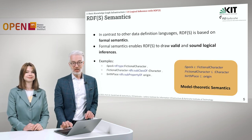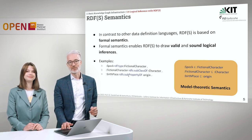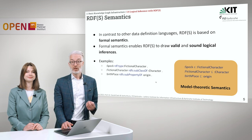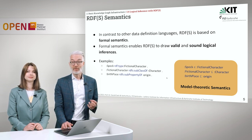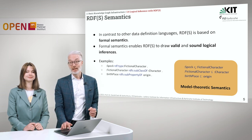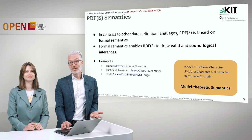Simple example: if you see here the RDF part that we have defined, Spock is a fictional character, a fictional character is a subclass of character, and birthplace is a subproperty of origin. For that, we have a model-theoretic semantics, meaning we have a model of what exactly this means, and this model is given in terms of formal logic. You can see here that Spock is an element of fictional character, so fictional character is then a class if we interpret this from a set-theoretical point of view.